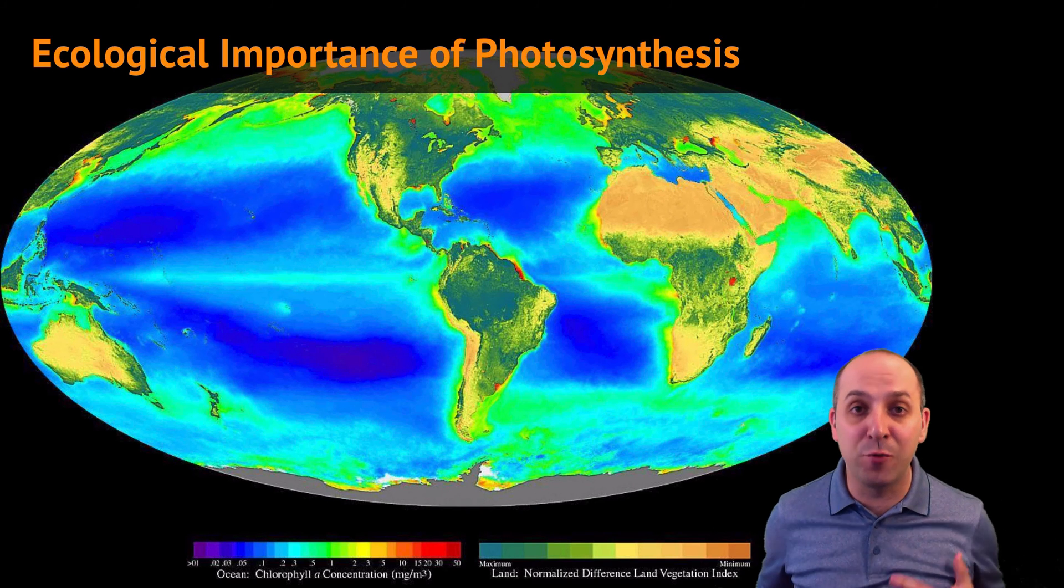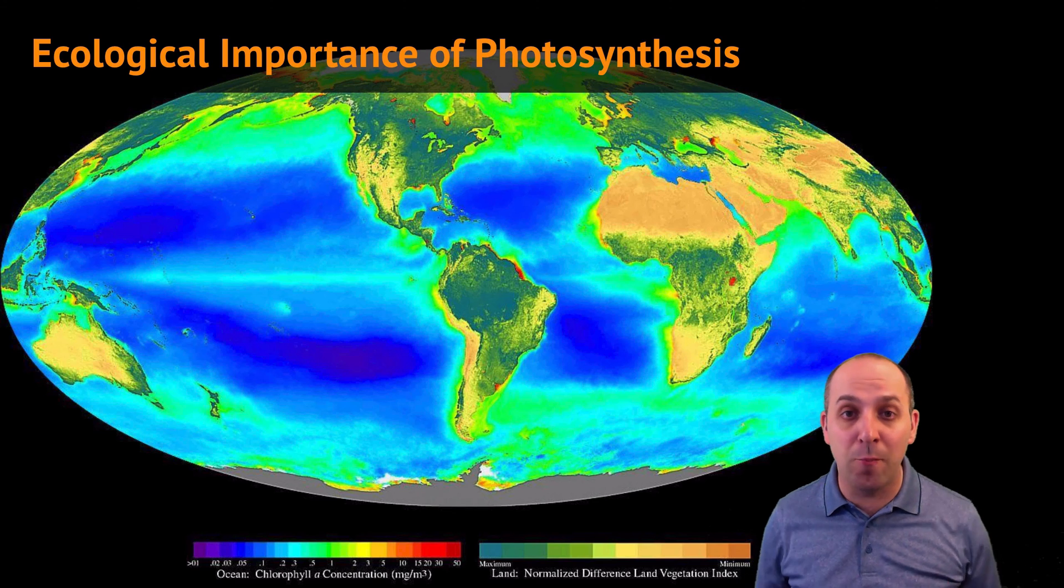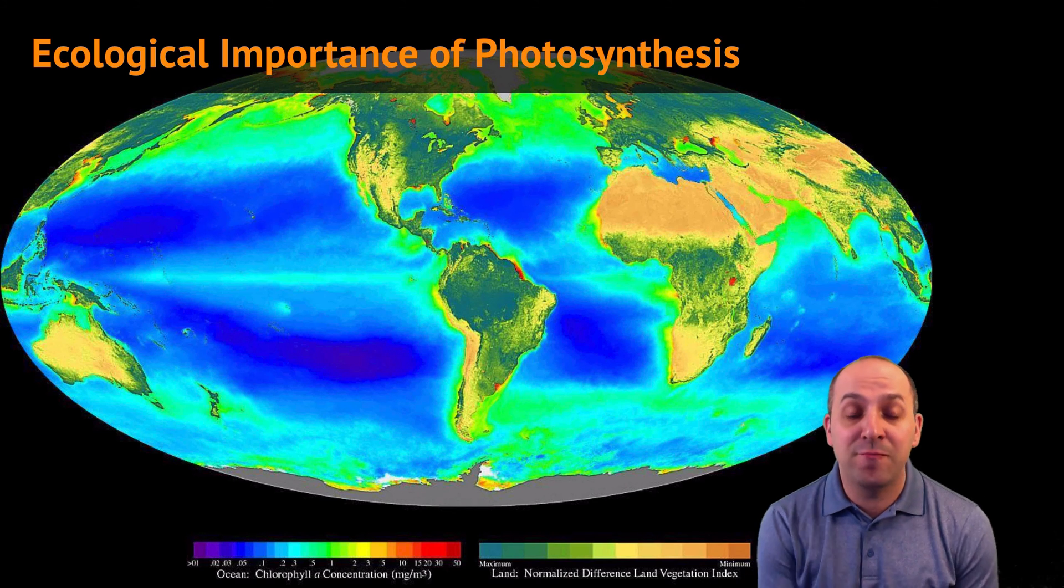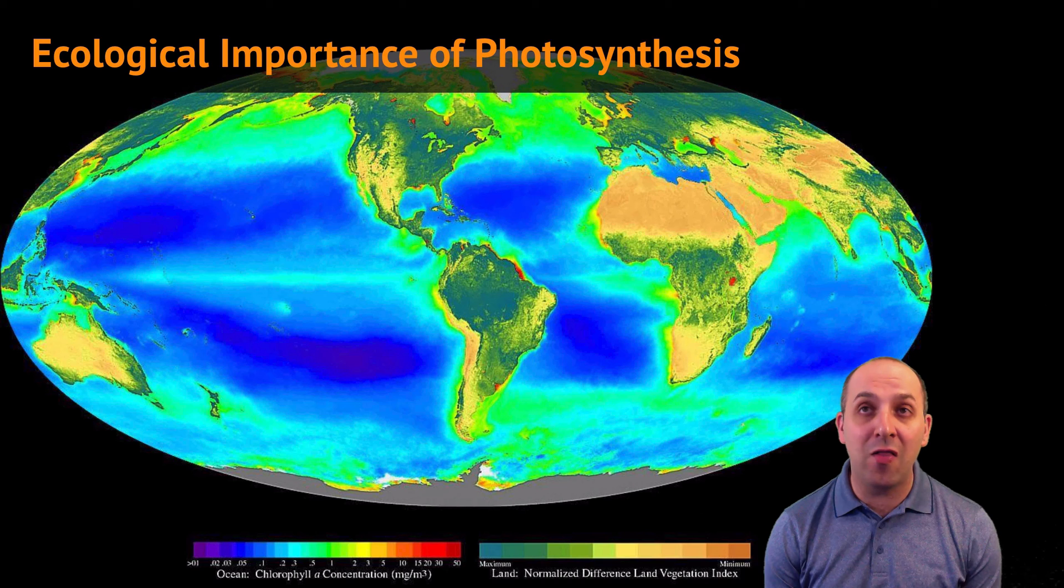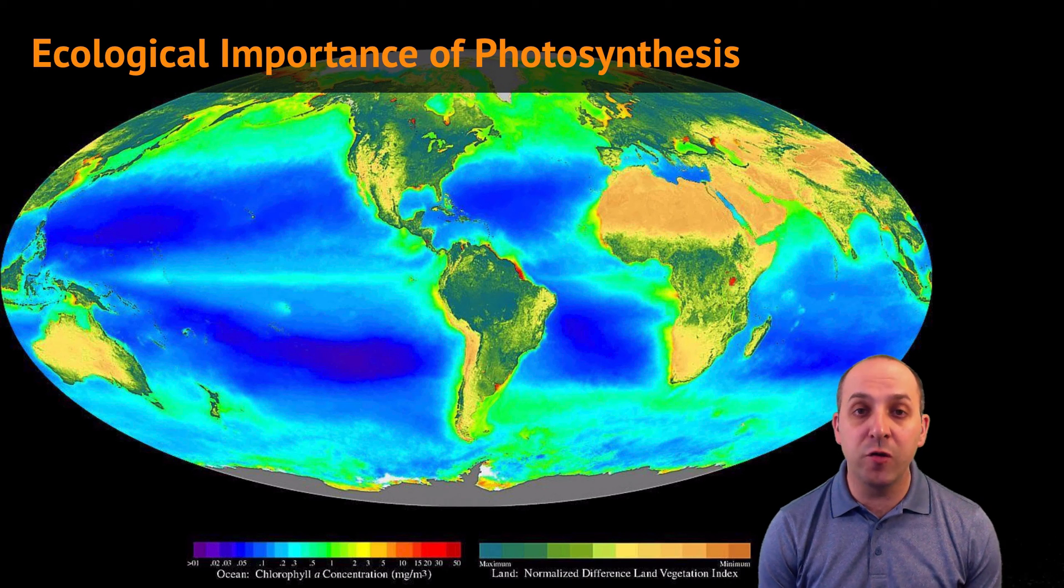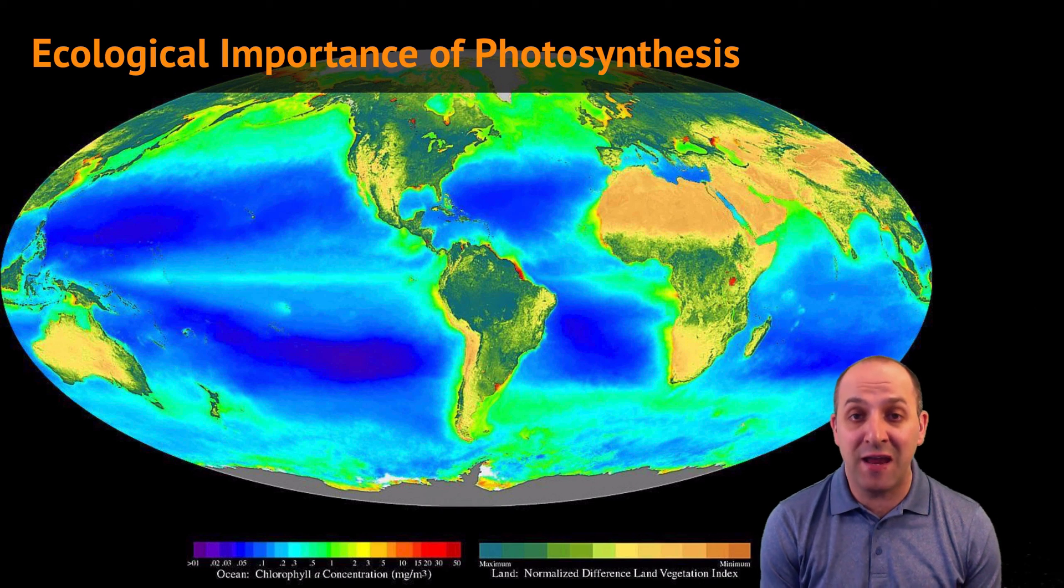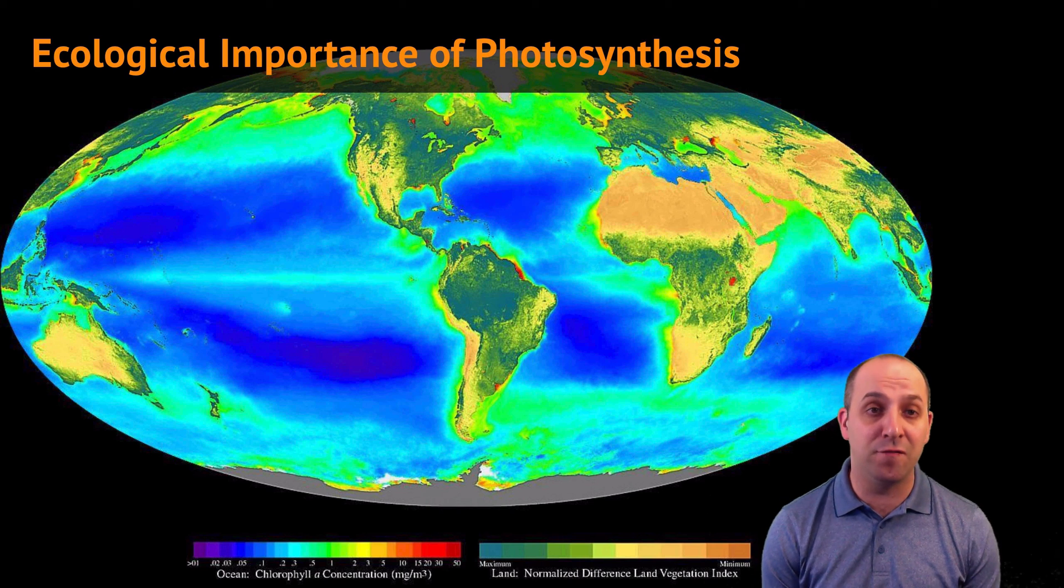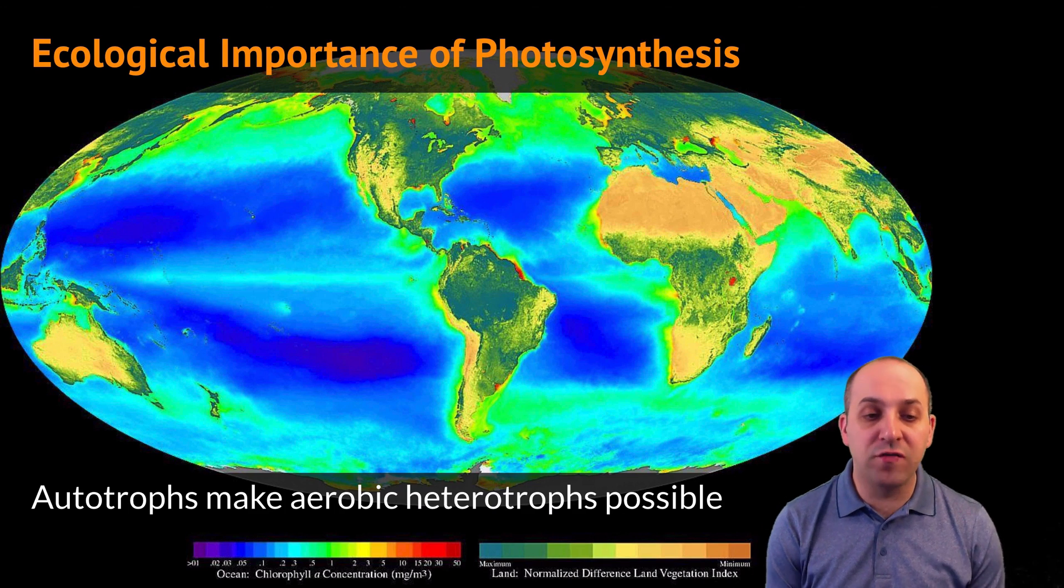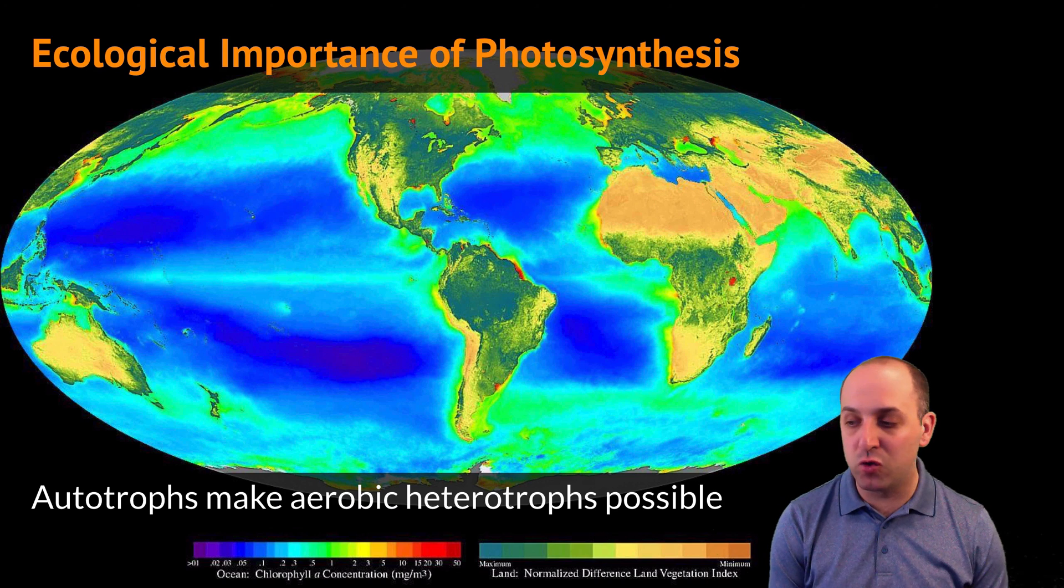Not only does photosynthesis produce all of the oxygen that we need to remain alive, it's also the process by which producers produce all of the biological molecules that every organism on the planet consumes to produce the chemical energy that they need in order to remain alive and functional. In other words, autotrophs are what make aerobic heterotrophs possible.